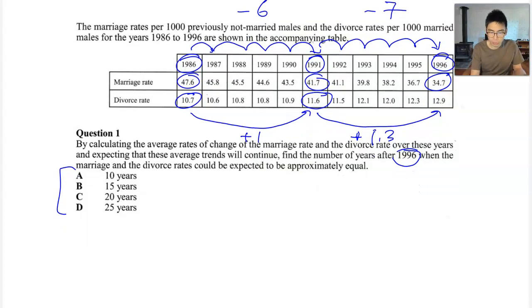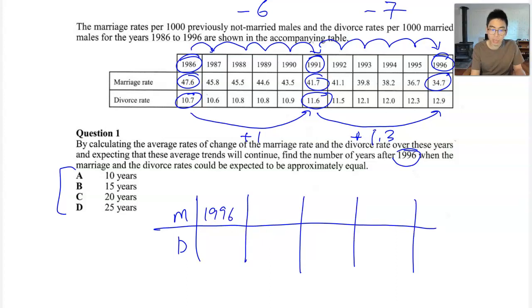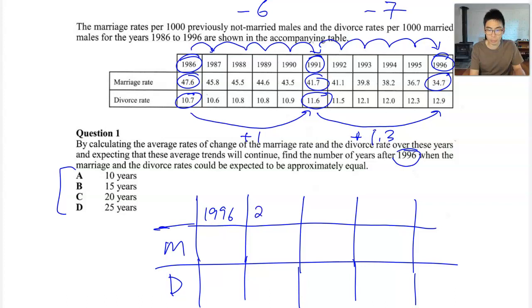So if I start a new table where I've got my marriage and my divorce rate, and we start off at 1996, and we're going to jump ahead in five-year increments. Now if I was to jump five years ahead from 1996, that would be 2001.